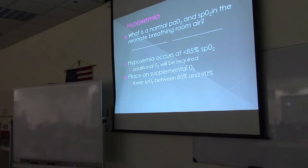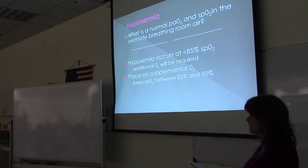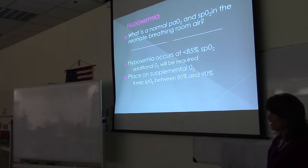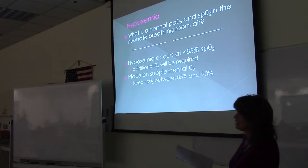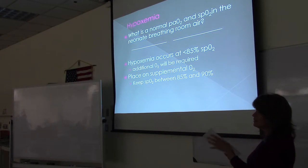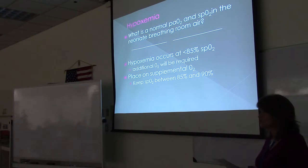One thing to keep in mind: prior to birth, the fetal PaO2 is about 30 millimeters of mercury, so their entire body is developing with an oxygen saturation of about 75%. Once they're born, we don't need to target a 90% sat in neonates because they don't need that much oxygen for that developmental stage.